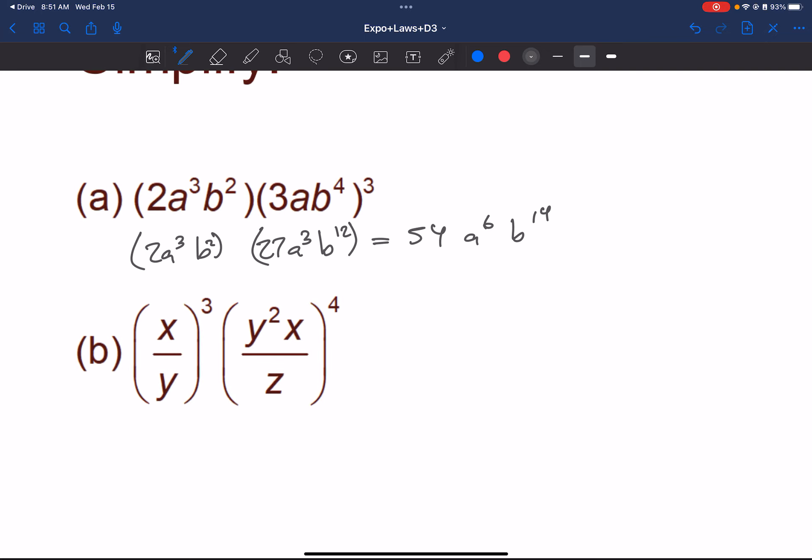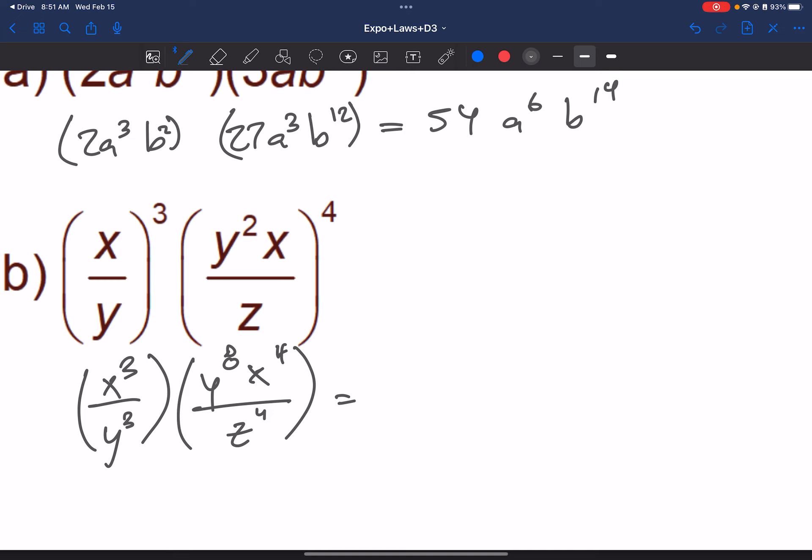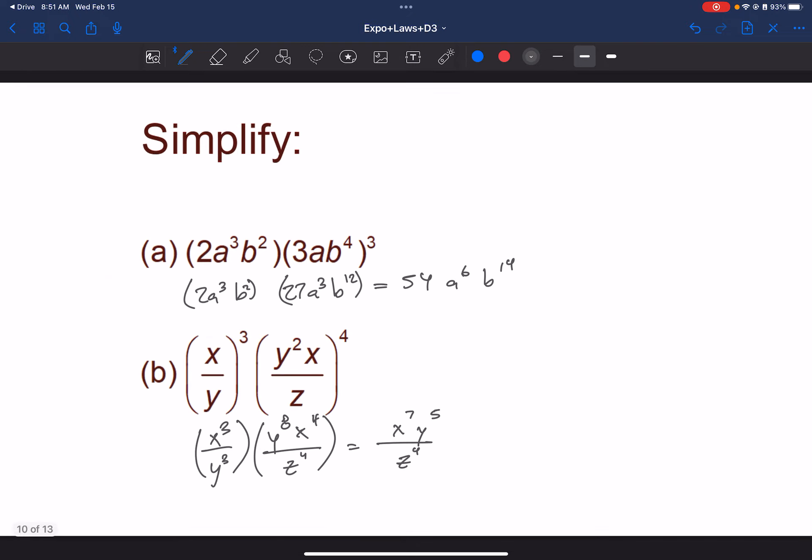Similar idea on the next one. We can distribute. So x to the 3rd, y to the 3rd, y to the 8th, x to the 4th, over z to the 4th. Multiplying this out, I have 7x's on top. I have 8x's, or sorry, 8y's on top and 3y's on bottom. So I really have 5y's on top and 4z's on bottom.